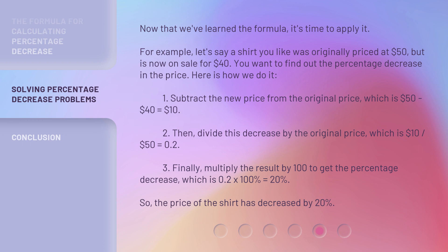1. Subtract the new price from the original price, which is $50 - $40 = $10. 2. Then, divide this decrease by the original price, which is $10 / $50 = 0.2.